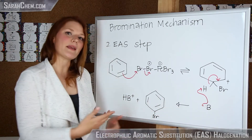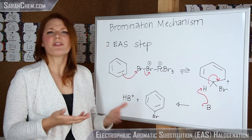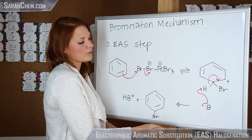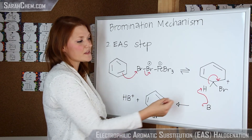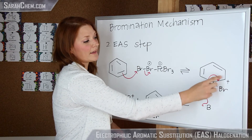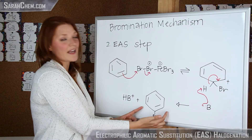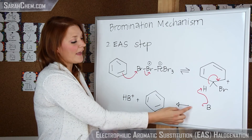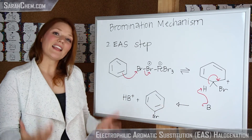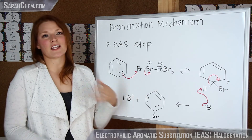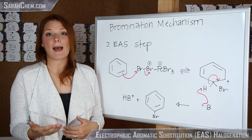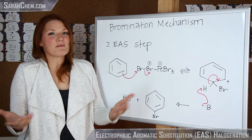There's going to be some kind of base in the solution that will come and deprotonate this compound. When this base comes and removes that hydrogen, we're going to see that the electrons that were part of that bond will come and collapse back down, re-establishing our aromaticity. This is going to be a one-way arrow because this step is so favorable. In the case of chlorination, it's pretty much the same — just substitute the bromines for a chlorine — and that's pretty much what you need to know.